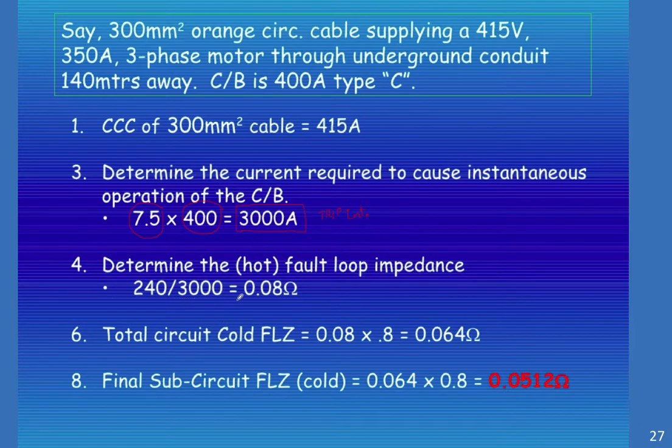Determine the fault loop impedance. If we look at one leg, that's 240 volts phase voltage. Divide that by 3000, we get 0.08 ohms. So the total cold fault level impedance (FLZ) is 0.08 × 0.8 = 0.064Ω.